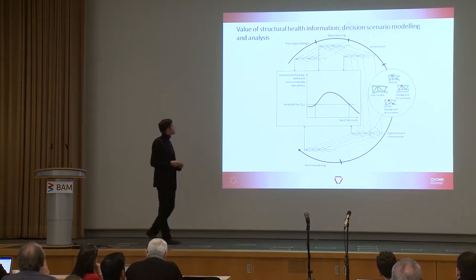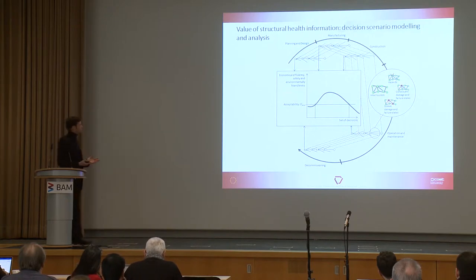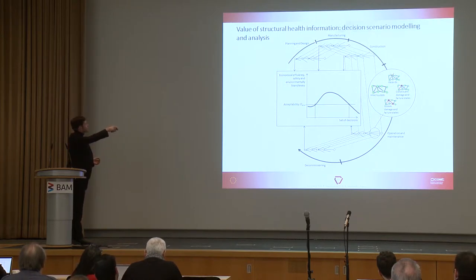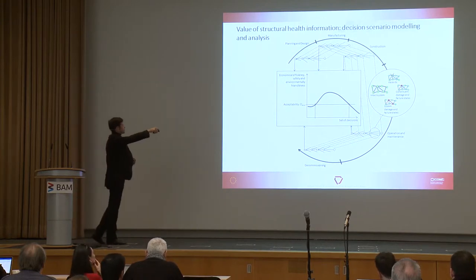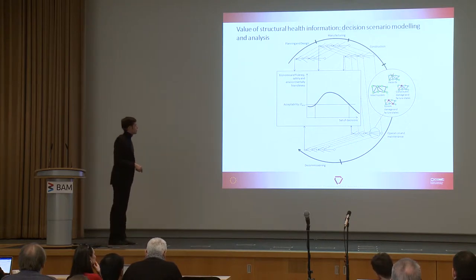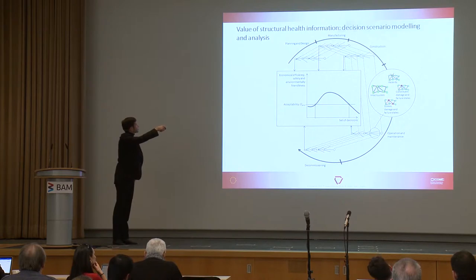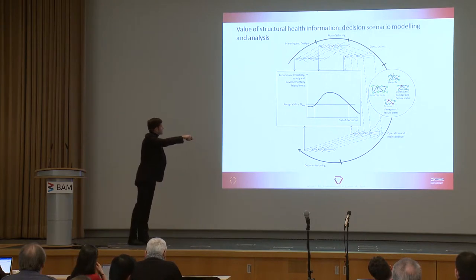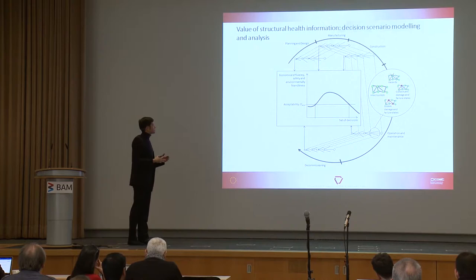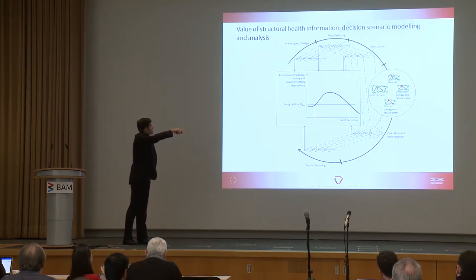To visualize a broad perspective, we should consider the life cycle of a structure from the planning and design phase over manufacturing, construction, a large time span for the operation and maintenance, and then the decommissioning phase. In all phases, there are decisions symbolized with the decision tree here. If we zoom in, we have the system states, which may be distinguished in a risk analysis framework into hazards, constituent damage and failure states, and then system damage and failure states.